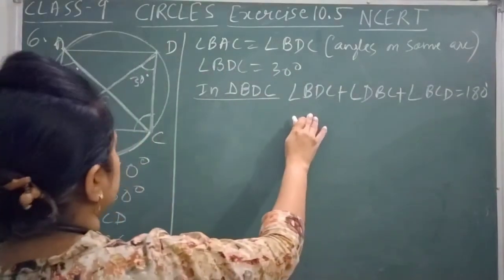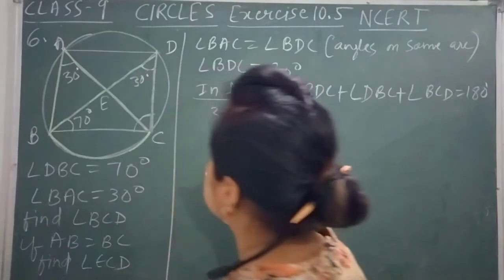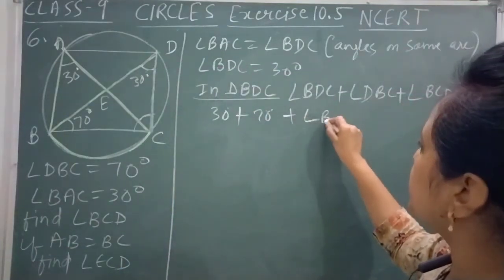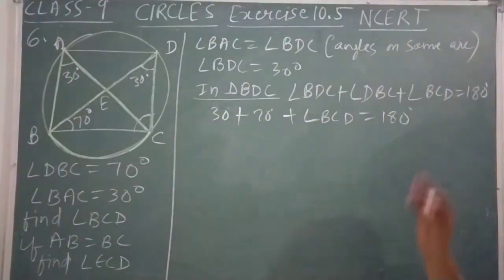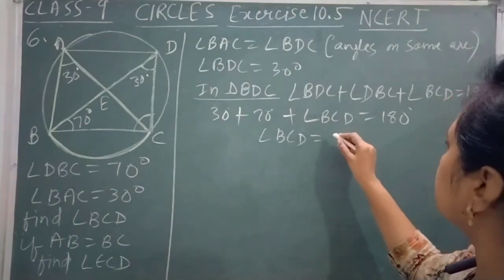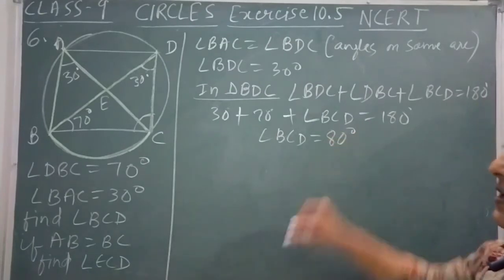Angle DBC is 30 degrees. Angle DBC is 70 degrees. So angle BCD equals 180 minus 100, that is 80 degrees.